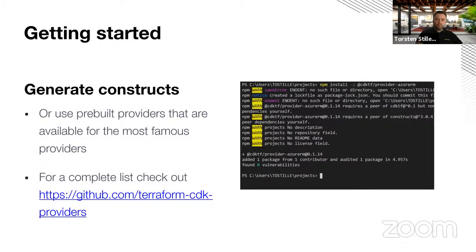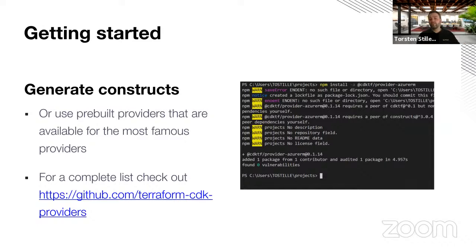For some of the most important providers, you can also use pre-built providers. This is the fastest and simplest way of using CDKTF, in contrast to generating the provider — you would just install it like with npm. One disadvantage is that it always refers to the latest version, so if you need a certain version, you have to generate it yourself. Make sure not to mix up imports — if you're mixing generated providers with pre-built ones and update one or the other, it might get bumpy.